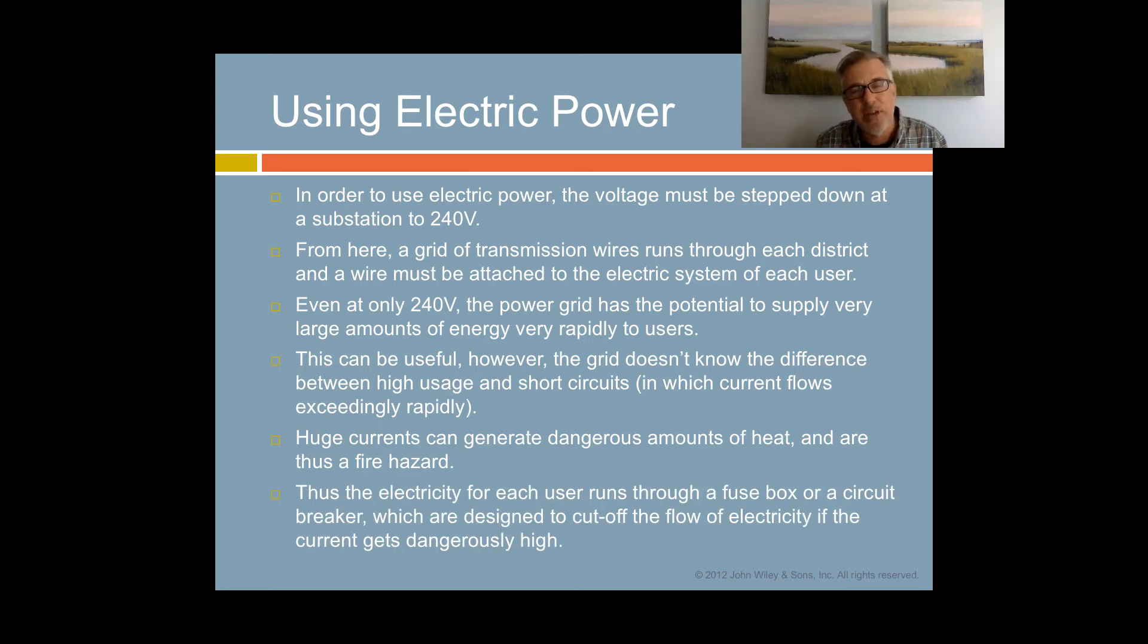Thus the electricity for each user runs through a fuse box, the old fashioned way, or a circuit breaker. These things are designed to cut off the flow of electricity if the current gets dangerously high. The fuses or circuit breakers are designed to recognize when there's exceedingly high current and shut that off very rapidly so no one gets hurt and fires don't occur.